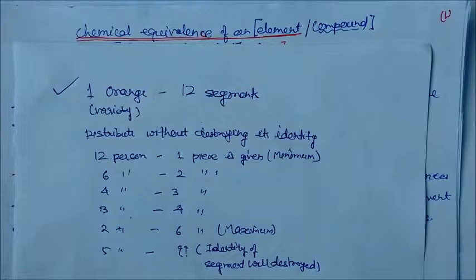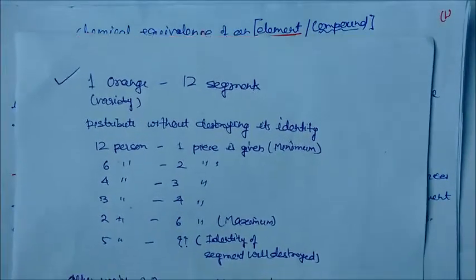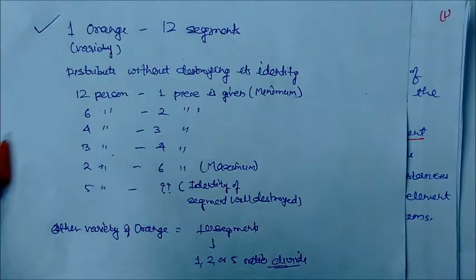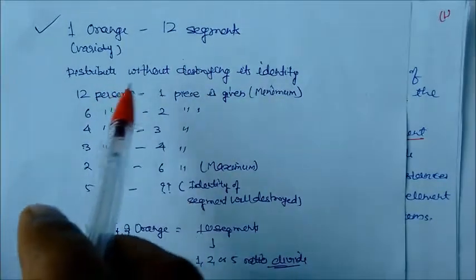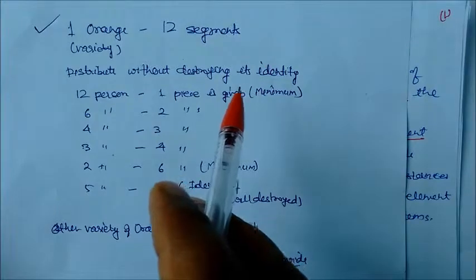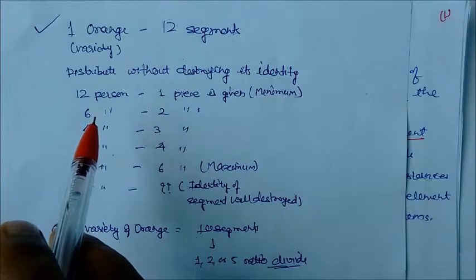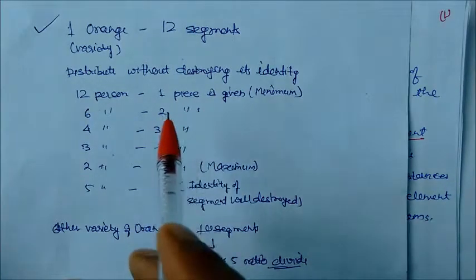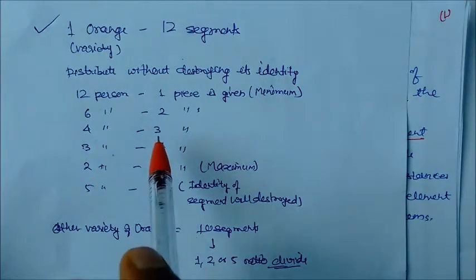Our topic is the chemical equivalent of an element or compound — in other terms, equivalent weight or equivalent mass. To understand what equivalent weight or equivalent mass means, let us take one example. Consider one variety of orange which contains 12 segments. We have to distribute these 12 segments without destroying their identity — meaning we cannot cut the segments. If there are two persons, we can give 6 pieces each; if six persons, two pieces each.